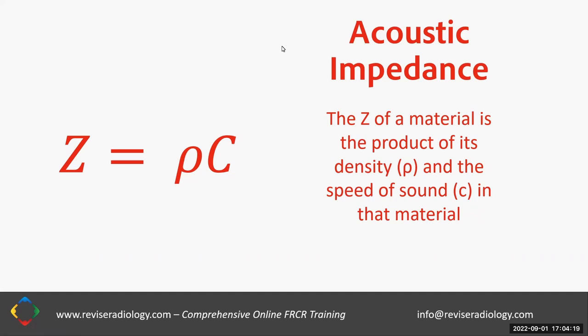Looking at the formula, Z equals rho — the density of the material — multiplied by the speed of sound C in that material. The product of these two factors gives us acoustic impedance. Why is acoustic impedance important? Because the difference in acoustic impedance at a boundary is what determines how much reflection happens at that boundary. Estimating whether a boundary will be highly reflecting or weakly reflecting depends on the difference in acoustic impedance at the boundary. The SI unit is the rayl.